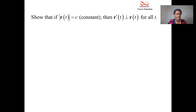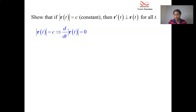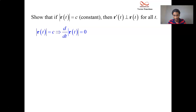Constant magnitude — what does that mean for us? Well, if you took the derivative of the magnitude, you should get zero. Derivative of a constant should be zero. What's the formula for the magnitude of a position function? Take each component, square it, add them up, take a square root.